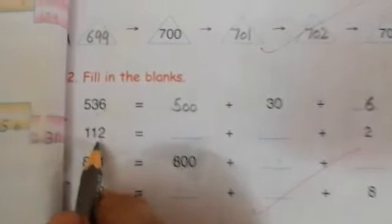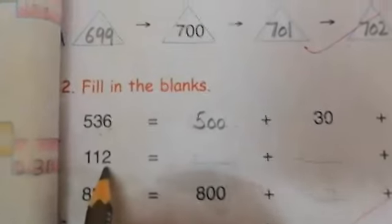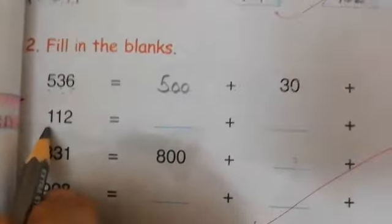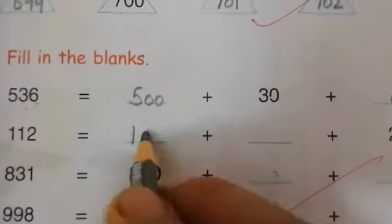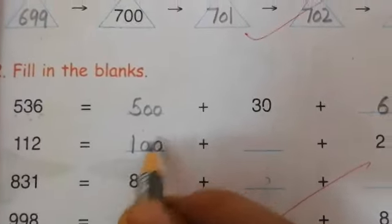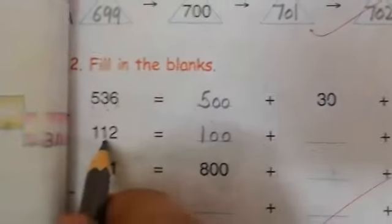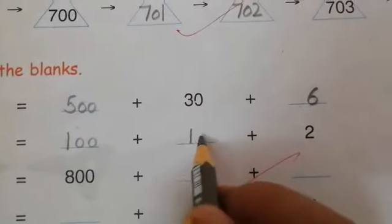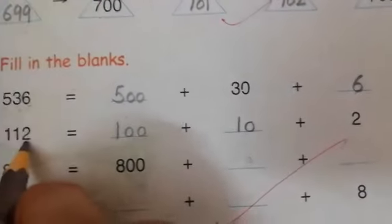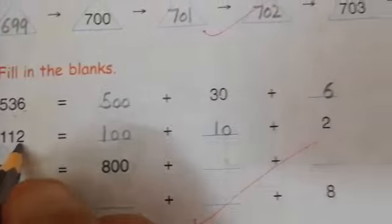Then we will write here 6. Read the number 112. How many hundreds are there? 100. We will write here 100. How many tens are there? 10. We will write here 10. And how many ones are there? 2.